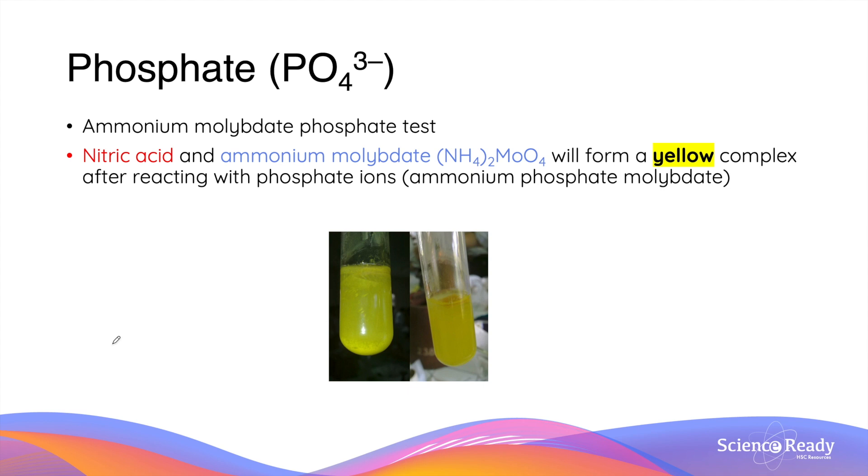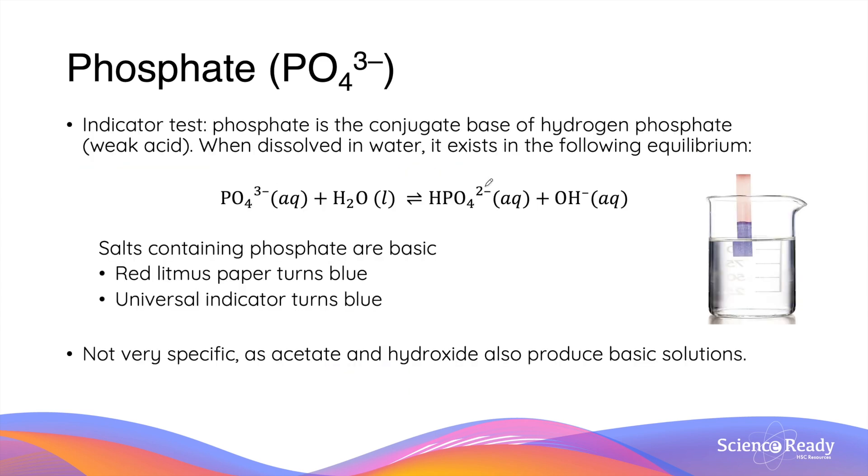Besides precipitation, phosphate ions can also be identified by using ammonium molybdate phosphate test. This is when the addition of nitric acid and a compound called ammonium molybdate will produce a yellow complex if there are any phosphate ions present. The chemical reaction between these chemicals is rather complex, so you will not be required to know them for the exam. However, it's good to know this as a very unique alternative to the precipitation test we learned earlier. Like many other anions, phosphate ions is the conjugate base of a weak acid, so it can react with water to produce hydroxyl ions shown by this equation.